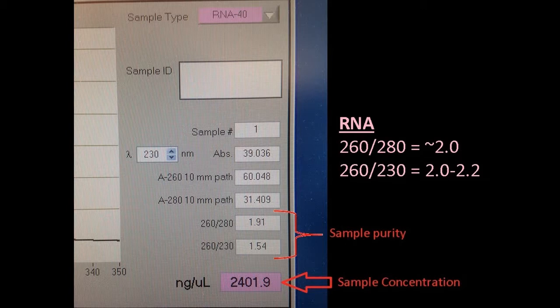However, the 260 to 230 value is a little lower than the acceptable range, which is likely due to phenol, since my RNA extraction was based on a phase separation method using that reagent.